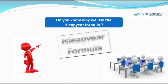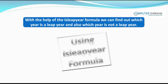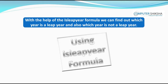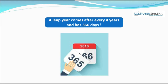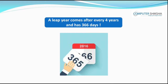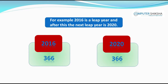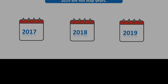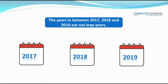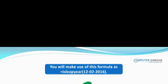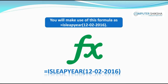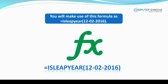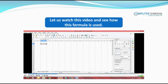Do you know why we use the is-leap-year formula? With this formula, we can find out which year is a leap year and which is not. A leap year comes every 4 years and has 366 days. For example, 2016 is a leap year and the next is 2020. The years 2017, 2018, and 2019 are not leap years. The formula is used as =ISLEAPYEAR().